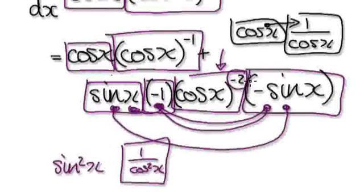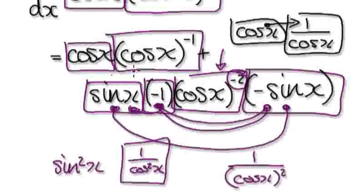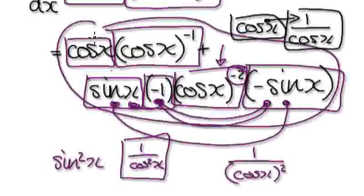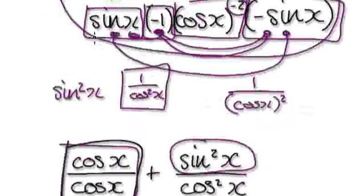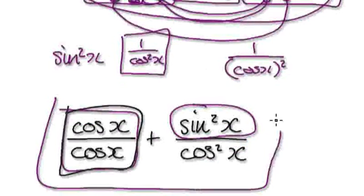Remember, the minus 2 power means it is really 1 over cos squared of x. So when you tidy up the whole expression, it looks like cos of x over cos of x plus sine squared of x over cos squared of x.